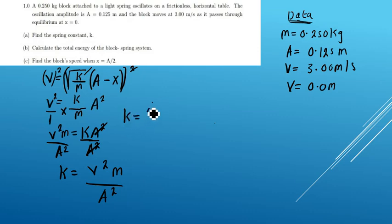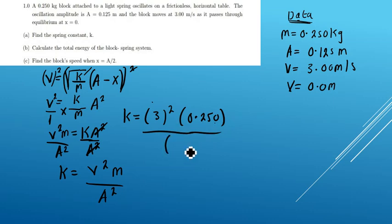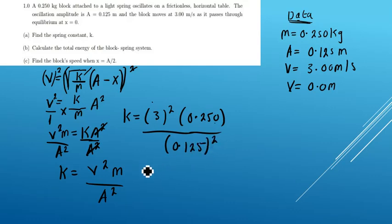So k equals the velocity squared — that is 3 squared — multiplied by the mass, which is 0.250 kg, divided by the amplitude of 0.125 meters, squared.